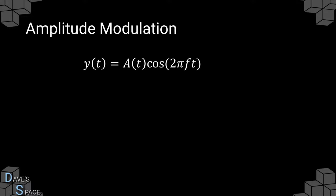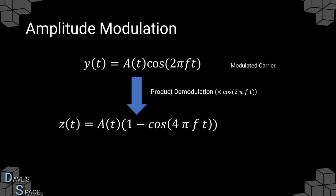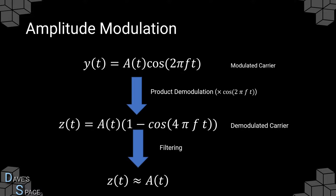The mathematics of Amplitude Modulation goes like this. We have our wave, which is the modulation waveform A(t) multiplied by some sinusoidal or cosinusoidal wave with frequency f — this is our modulated carrier. The product demodulation step is when we multiply this wave by cosine or sine of the same frequency, giving us a signal proportional to the summation of the modulation waveform and a high frequency component at twice the original carrier frequency. We can then apply filtering to remove the high frequency components, leaving us with a signal roughly equal to the original modulation waveform A(t).